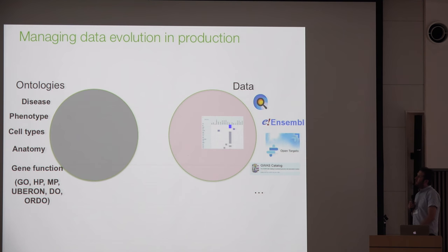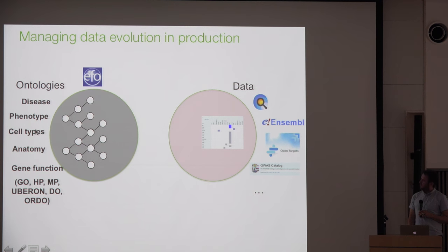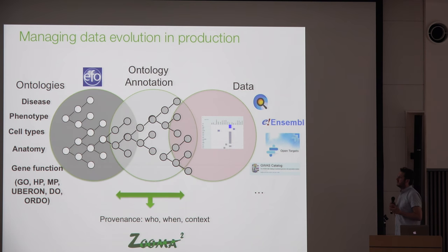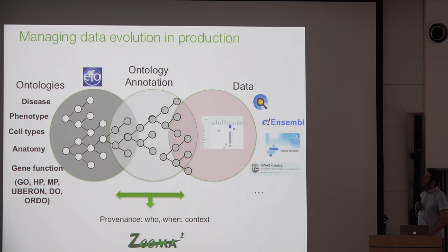We're in a situation where we have to manage the evolution of both data and ontologies simultaneously. On one side we have data — things are getting released almost daily or monthly. On the other side we have ontologies, which are also changing. EFO is our shield to those outside ontologies, giving us a stable view. In the middle is the space where all the mappings live — pulled out into our Zooma database where we capture all the provenance: where a particular ontology term is being used, in which dataset, who made the annotation, what confidence they have, and so forth.